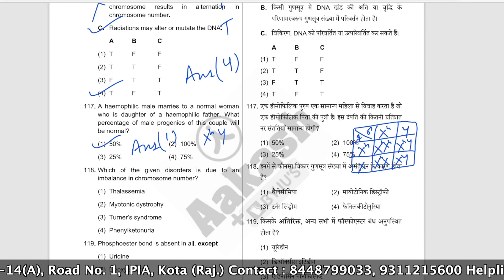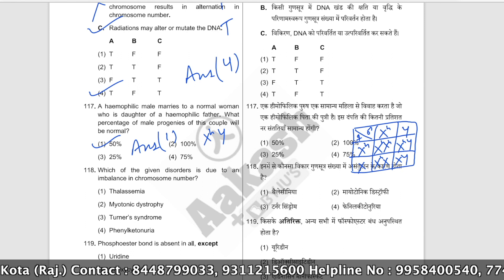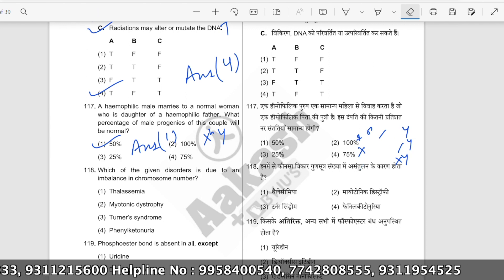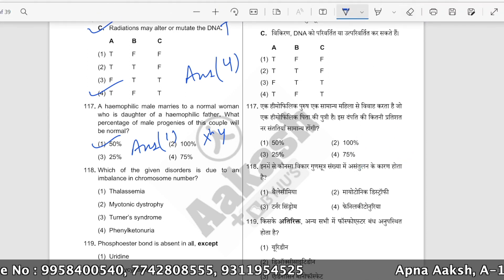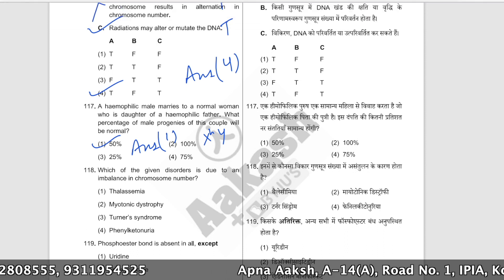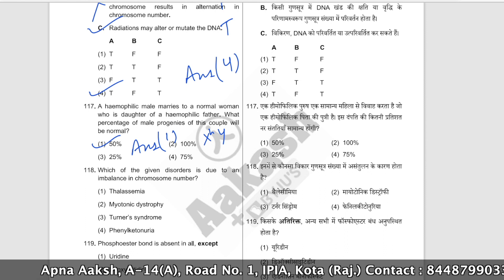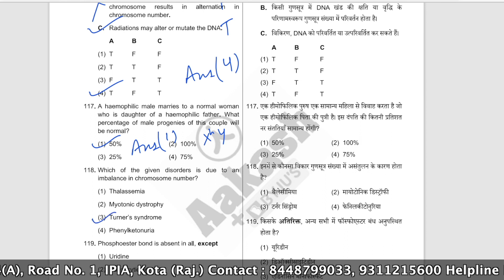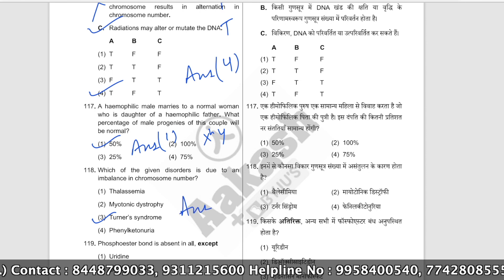Which of the given disorders is due to an imbalance in chromosome number? Turner syndrome (XO) occurs when one X chromosome is absent in females. This is due to an imbalance in chromosome number. The correct answer is option number three.